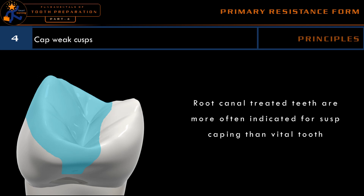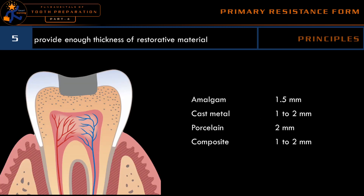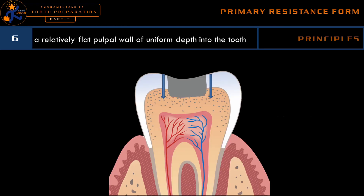The fifth principle is to provide adequate thickness of restorative material. If there is no adequate thickness, the material itself will become weak and will fracture. For most amalgam restorations, the minimum thickness should be 1.5 millimeters. For cast metal restorations, it should be 1 to 2 millimeters. For porcelain or ceramic restorations, the minimum thickness should be 2 millimeters. For composite restorations it varies, but in the stress-bearing area it should have at least a minimum thickness of 1 to 2 millimeters.